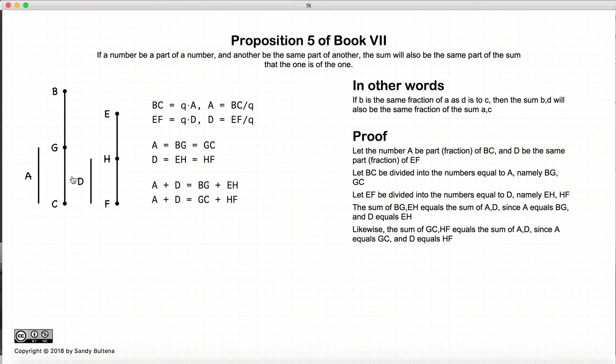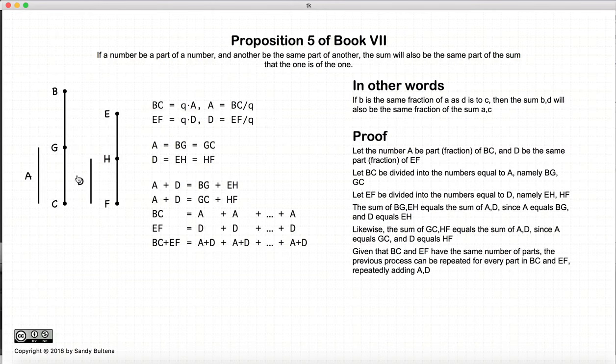Now, in this particular example, our fraction is a half, but if it were more than a half, we would just keep doing this over and over again. We would have that bc is equal to a plus a plus a and so on. And ef would be equal to d plus d plus d and so on and so forth.